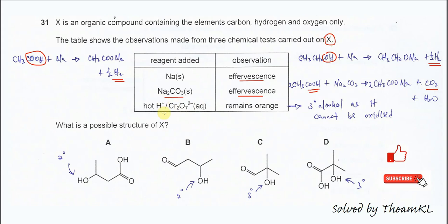Now the last one. When the X with the hot acidified dichromate solution, the color of the dichromate initially is orange color. After they added, the orange color no change. Which means the oxidizing agent is not able to oxidize X. So which means if there is alcohol group in X, the alcohol must be tertiary alcohol.